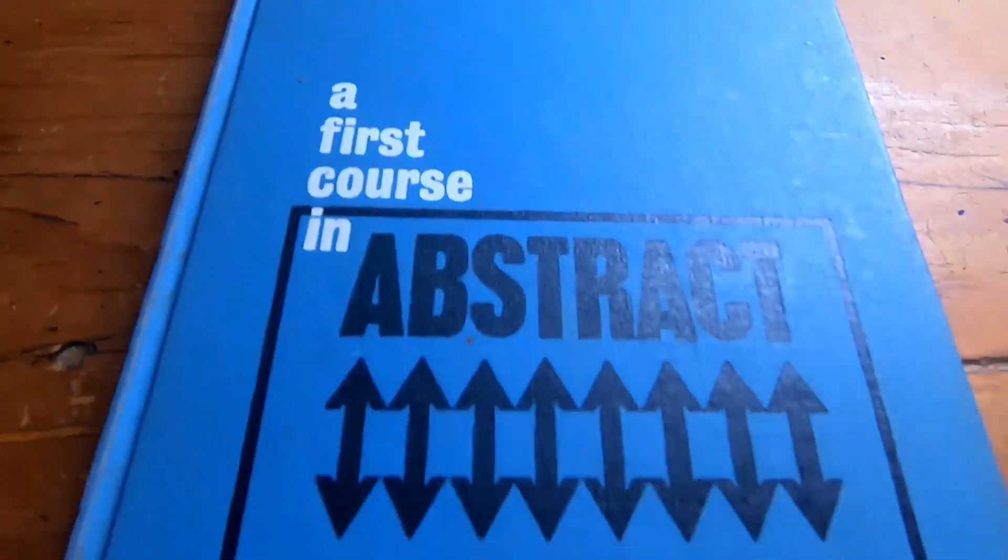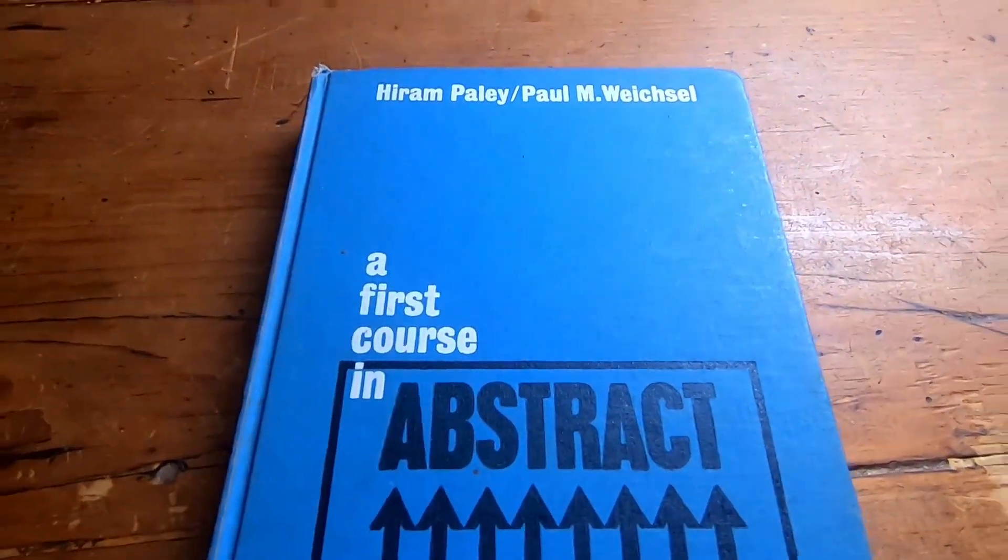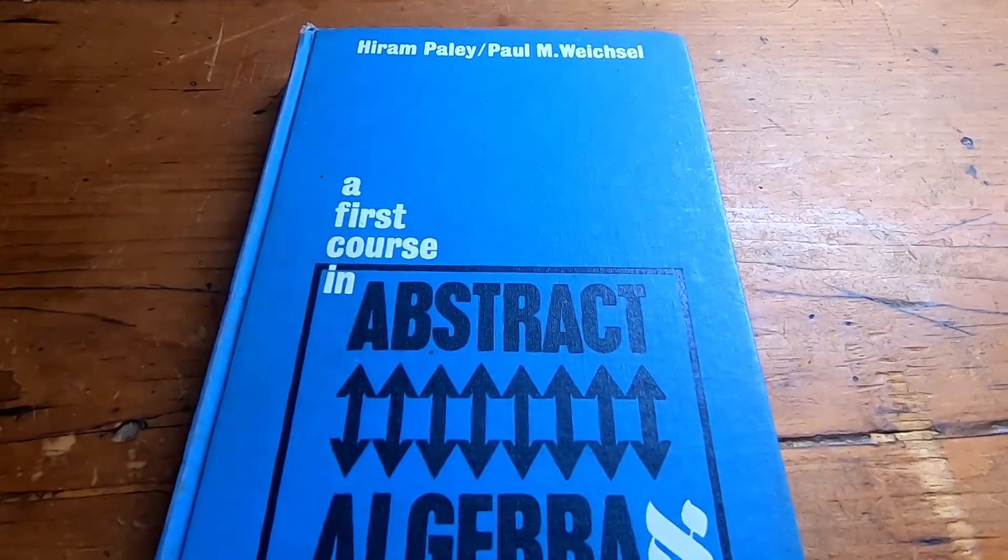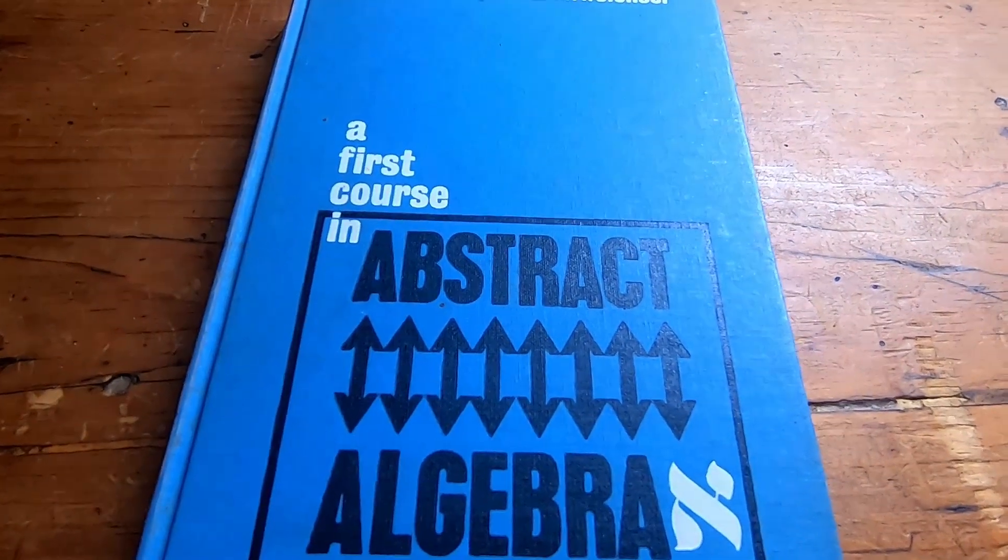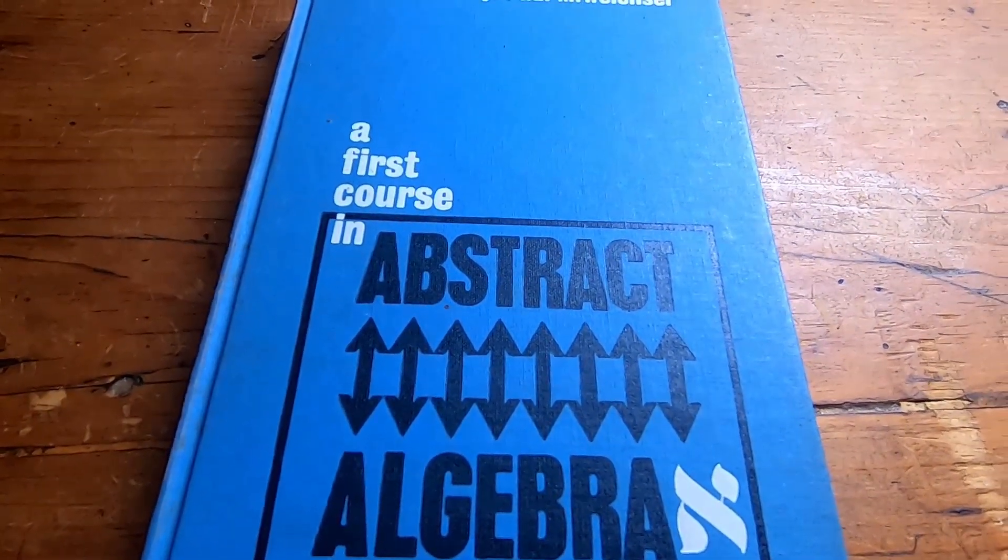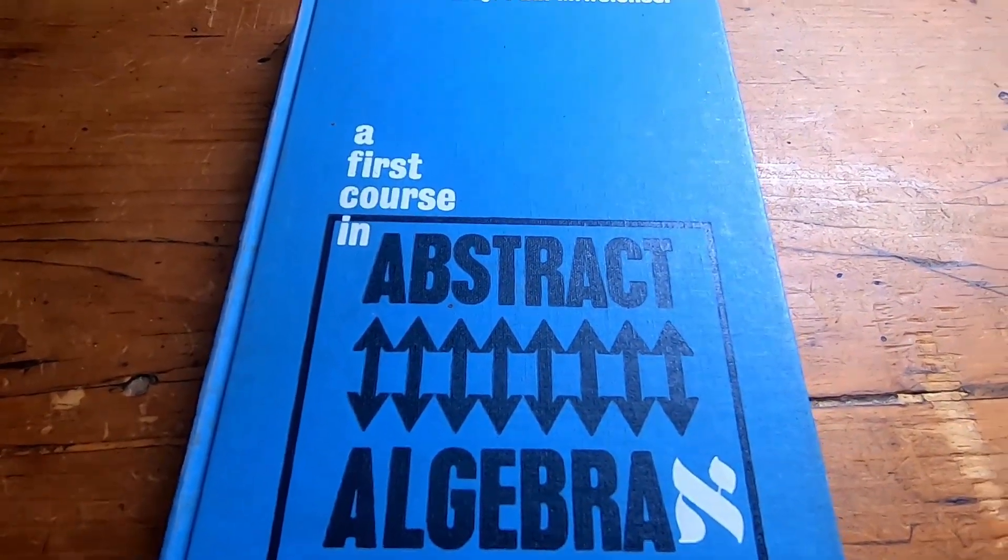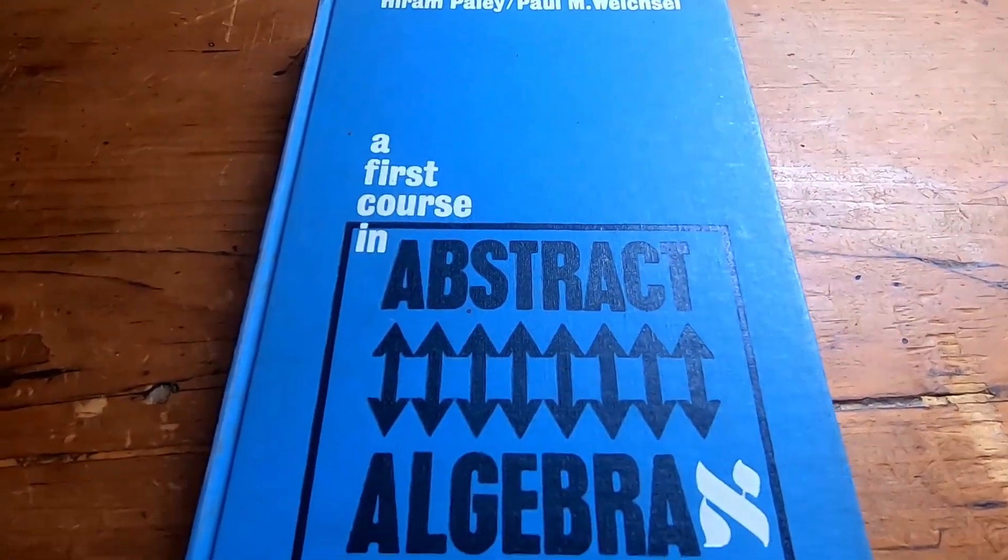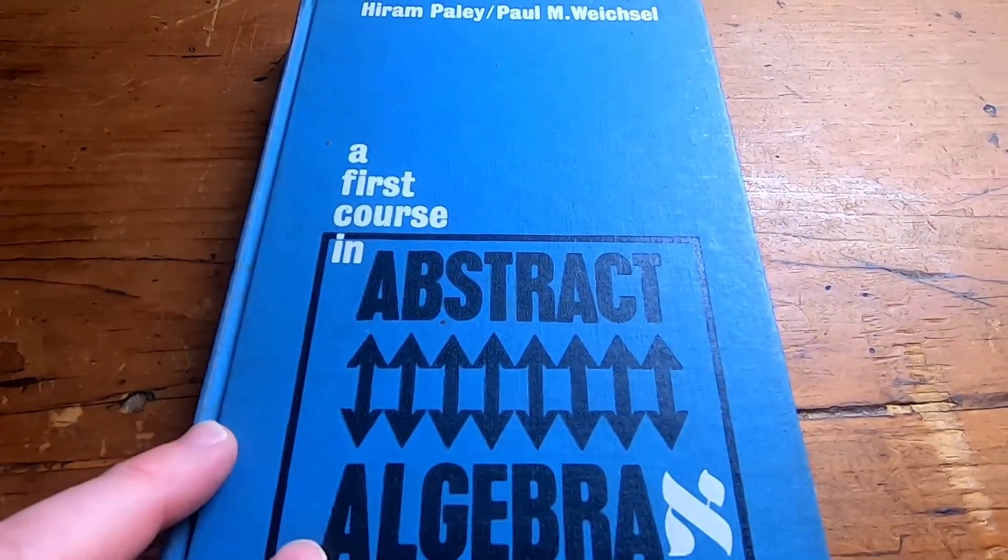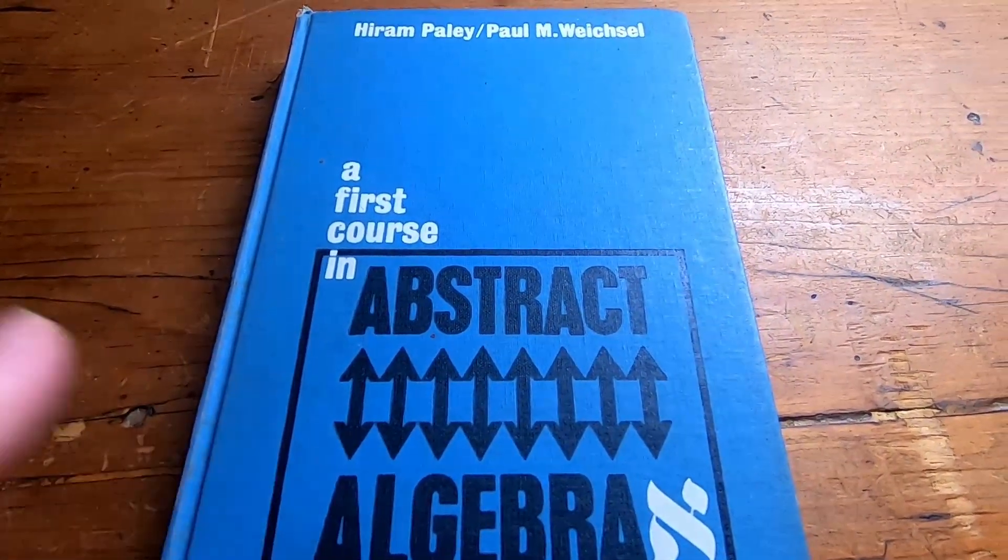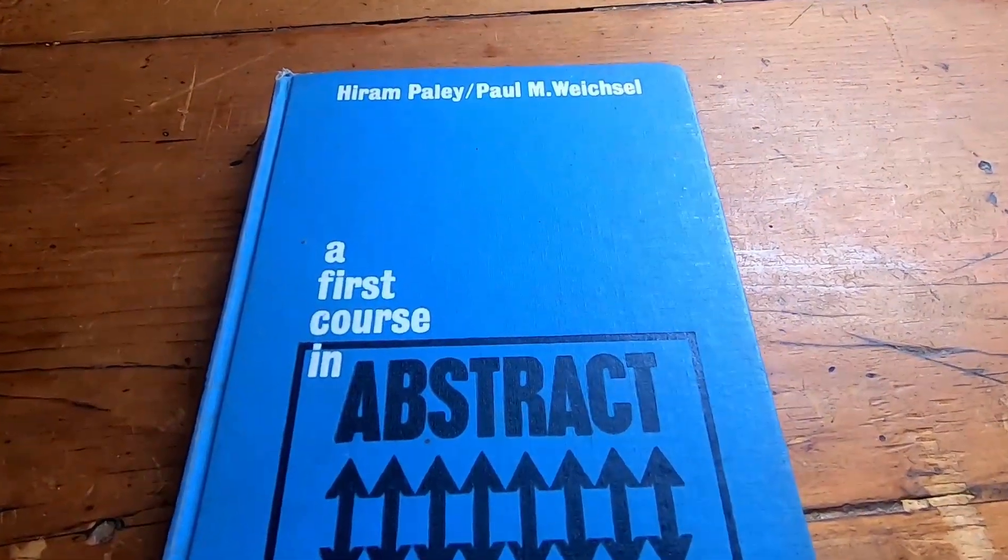Again, it's a first course in abstract algebra by Paley and Weichsel. You can probably get this book for just a few dollars. I'm pretty sure this book is not popular. And as soon as I make this video, as soon as I stop the camera, I'm going to go on Amazon and I'm going to look to see if they still make this book. Because I think they don't. That's my theory. I hope I'm right because then I said the wrong thing in the video. But I'm pretty sure they made this book in the 60s and it wasn't reproduced. Because I've never heard of anyone else having this book. I mean, I'm the only person I know that owns it.